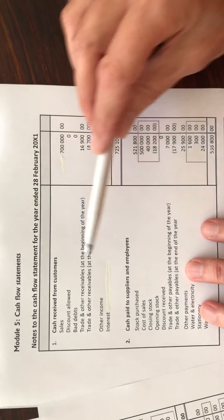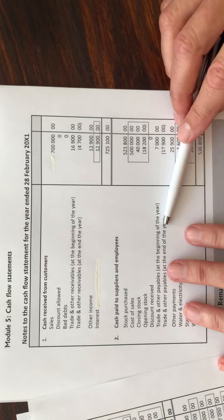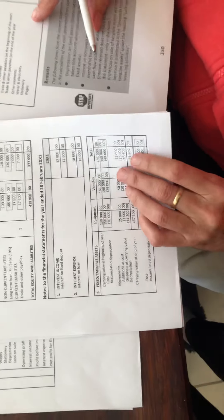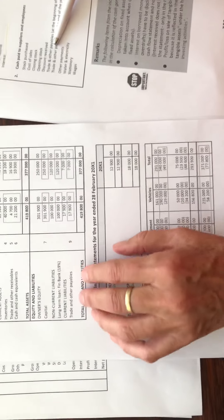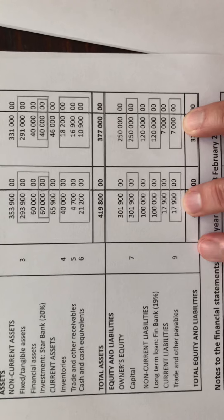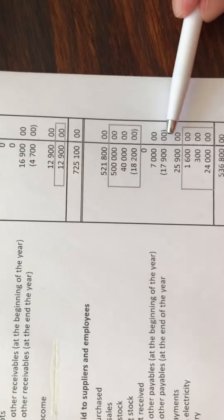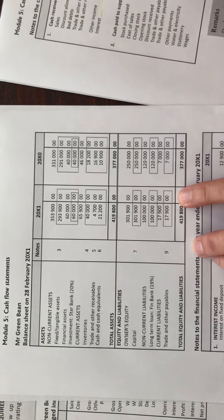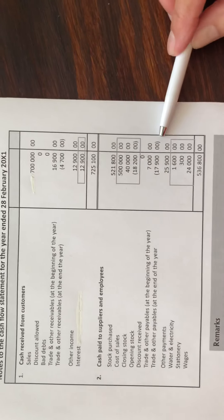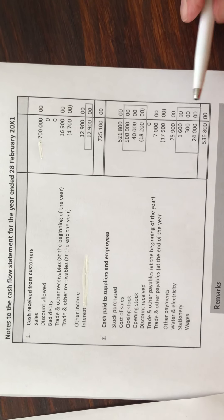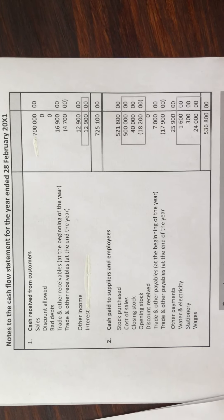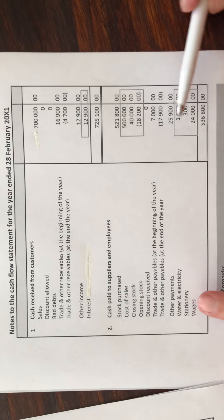We have to take trade and other payables into account — because that includes creditors — for the same reason as explained about debtors. We add trade and other payables at the beginning of the year, which was 7,000 from the balance sheet. We deduct trade and other payables at the end of the year, which is 17,900 from the balance sheet. Then we add other payments or other expenses.